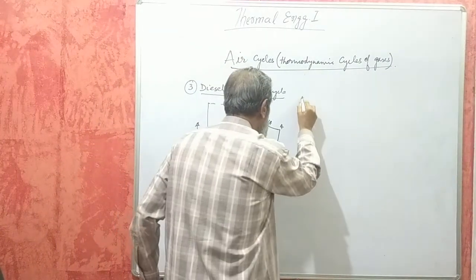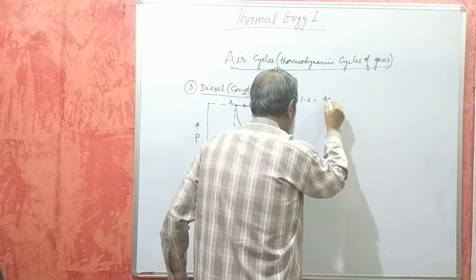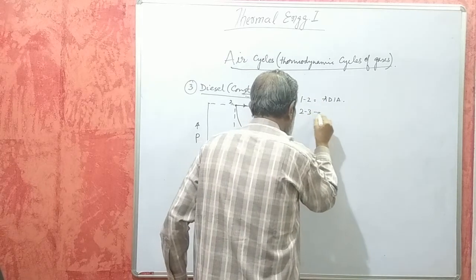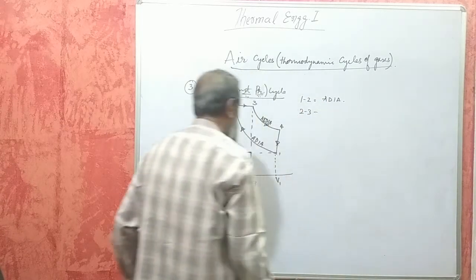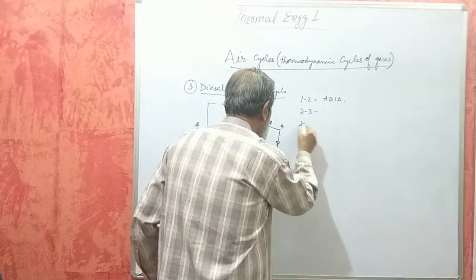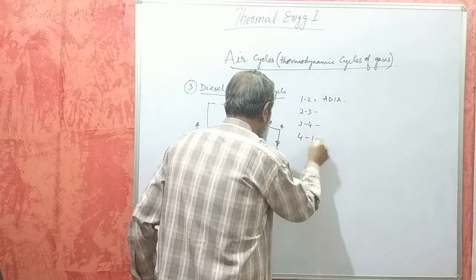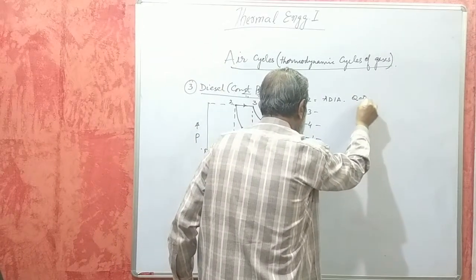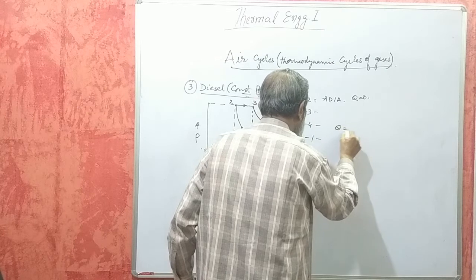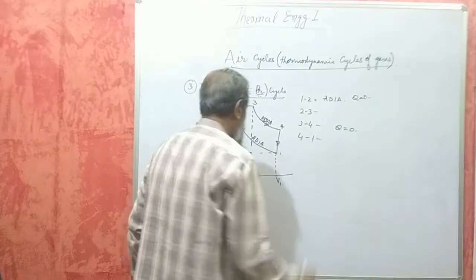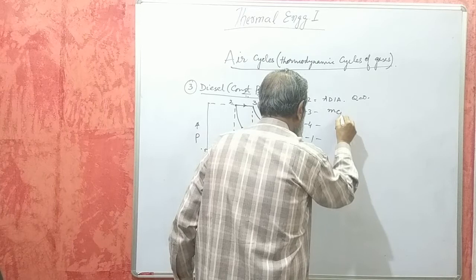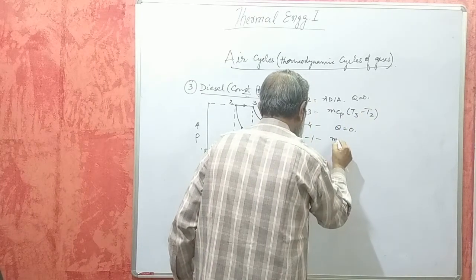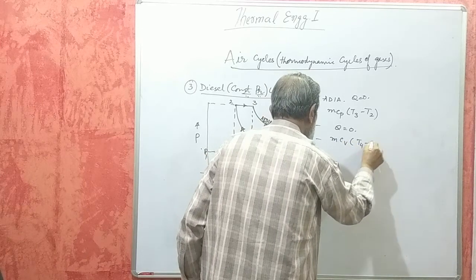So, process 1–2 is adiabatic compression. Process 2–3 is the constant pressure heating process. Process 3–4 is adiabatic expansion. Process 4–1 is a constant volume process with no heat transfer, Q equals zero. Heat is absorbed in process 2–3 and equals M·Cp·(T3 − T2). Heat rejected in process 4–1 equals M·Cv·(T4 − T1).